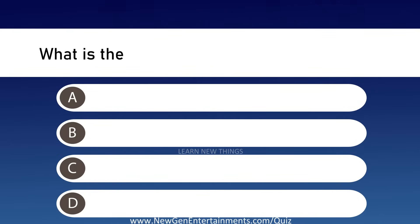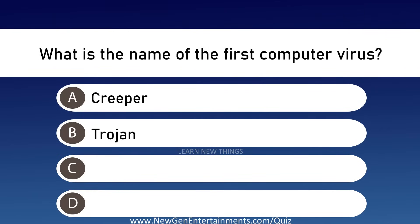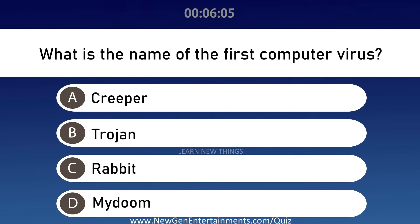What is the name of the first computer virus? Options are A: Creeper, B: Trojan, C: Rabbit, and D: My Doom. Answer is Option A, Creeper.